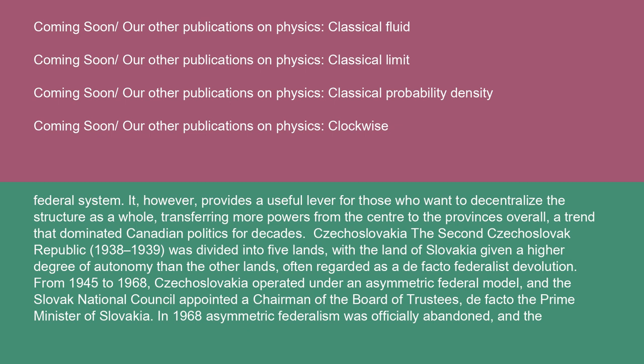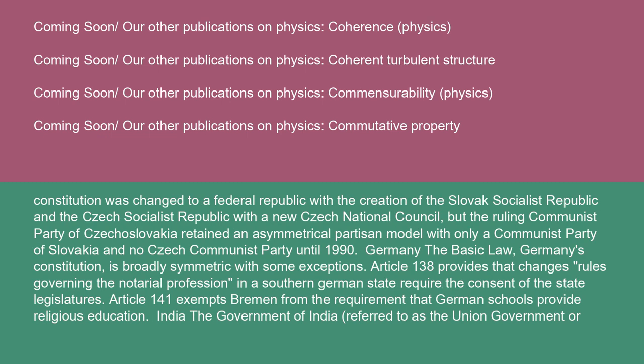In 1968, asymmetric federalism was officially abandoned, and the constitution was changed to a federal republic with the creation of the Slovak Socialist Republic and the Czech Socialist Republic with a new Czech National Council. But the ruling Communist Party of Czechoslovakia retained an asymmetrical partisan model with only a Communist Party of Slovakia and no Czech Communist Party until 1990.